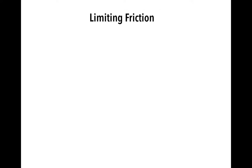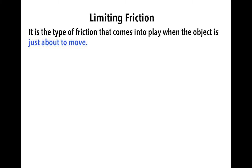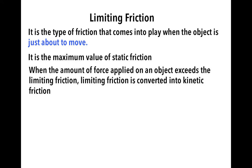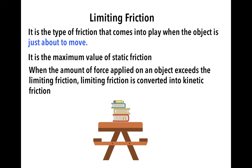The next type of friction is limiting friction. It is the type of friction that comes into play when the object is just about to move. It is the maximum value of static friction. When the amount of force applied on an object exceeds the limiting friction, limiting friction is converted into kinetic friction. Here, there is no motion of the object. If the limiting friction for a surface is 10 newtons and the force applied is 12 newtons, the friction won't adjust, because as soon as the force applied is greater than the limiting friction, the type of friction that comes into play is kinetic friction.